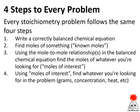When you're approaching a stoichiometry problem, approach them all the same way — they all have the same four steps. Those steps are: write a balanced chemical equation, find moles of something that you know, use the mole-to-mole relationship in the balanced equation to change moles of what you know to moles of what you're looking for, and then change those moles into whatever the problem is asking for, whether it's grams, milliliters, concentration, or heat.